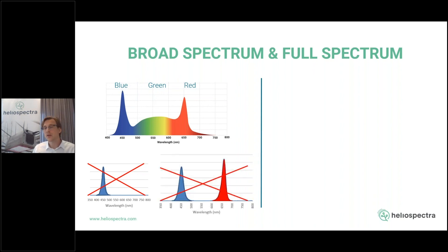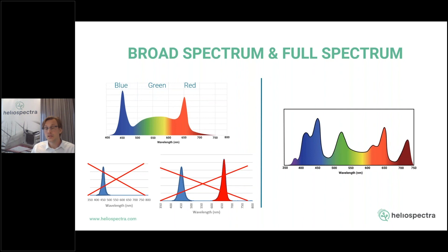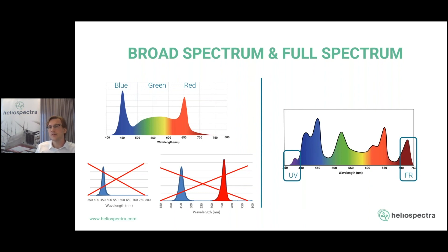Moving on to full spectrum light: it looks similar to broad spectrum in that it has blue, green, and red, but the key difference is that full spectrum light also includes UV and far red. A full spectrum light has all the different components that are of direct relevance to the plant — not only PAR (blue, green, and red), but also UV and far red. That's how you differentiate between a broad spectrum and a full spectrum.